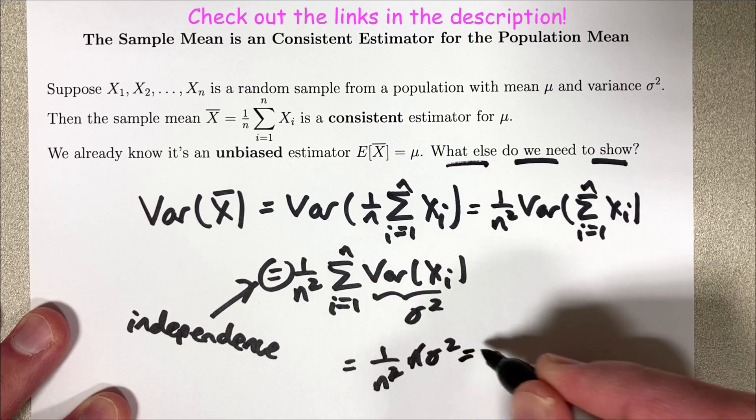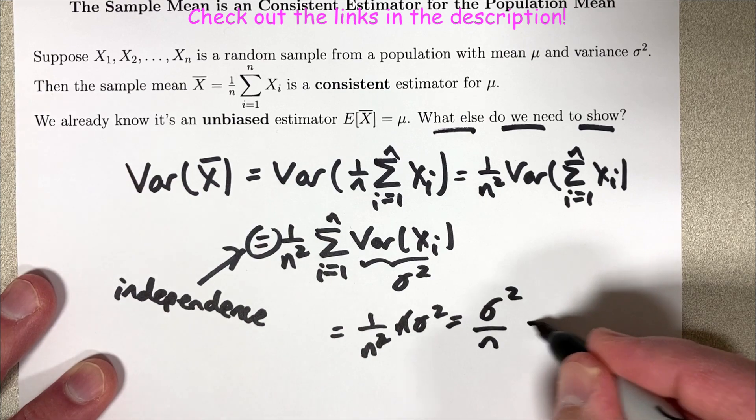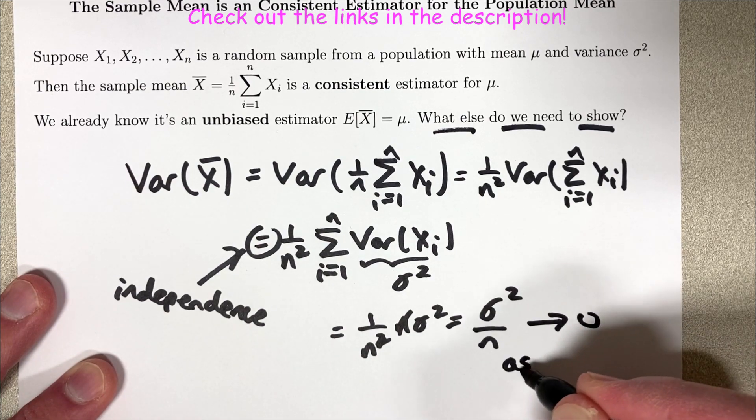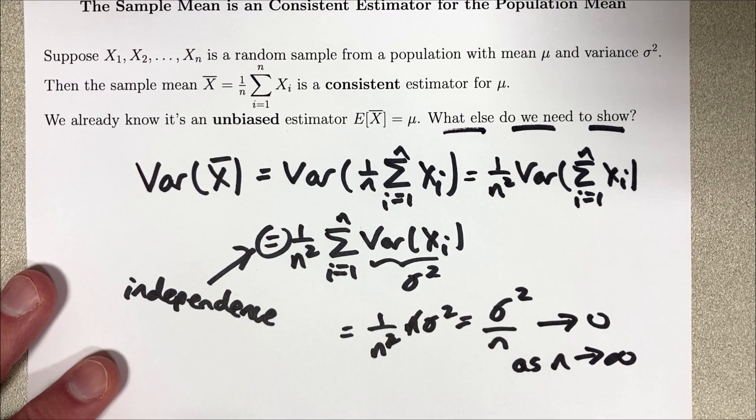One factor of n cancels. You're left with sigma squared over n. And that definitely goes to zero as n goes to infinity. And that's what we need to show to show that x bar is not only unbiased but also consistent.